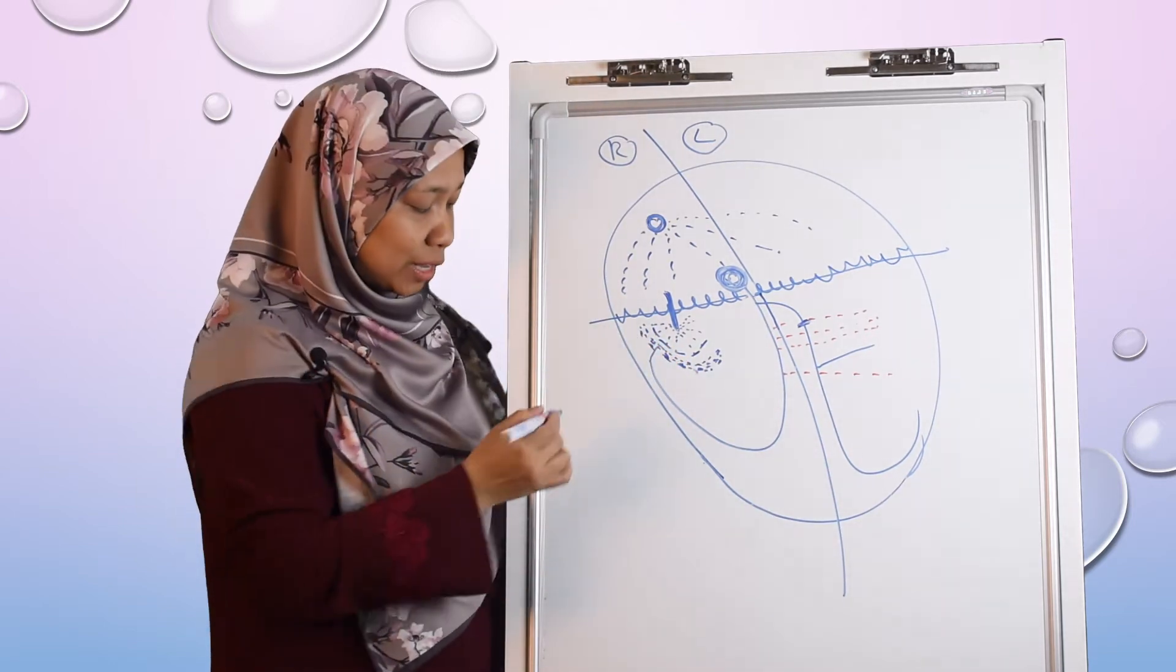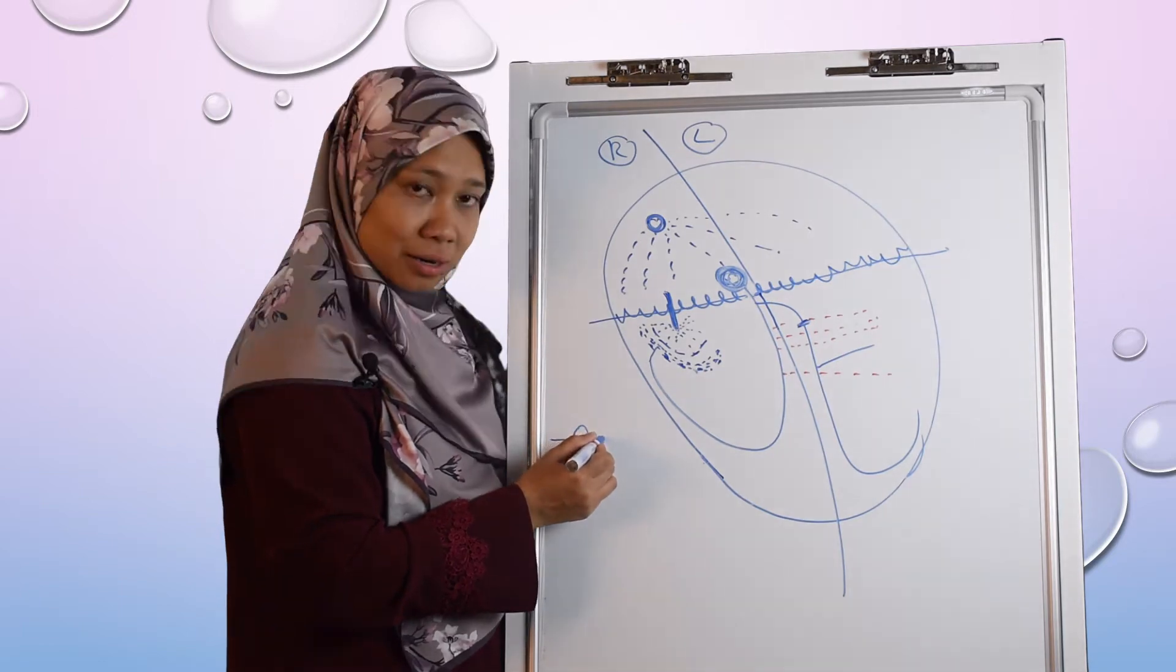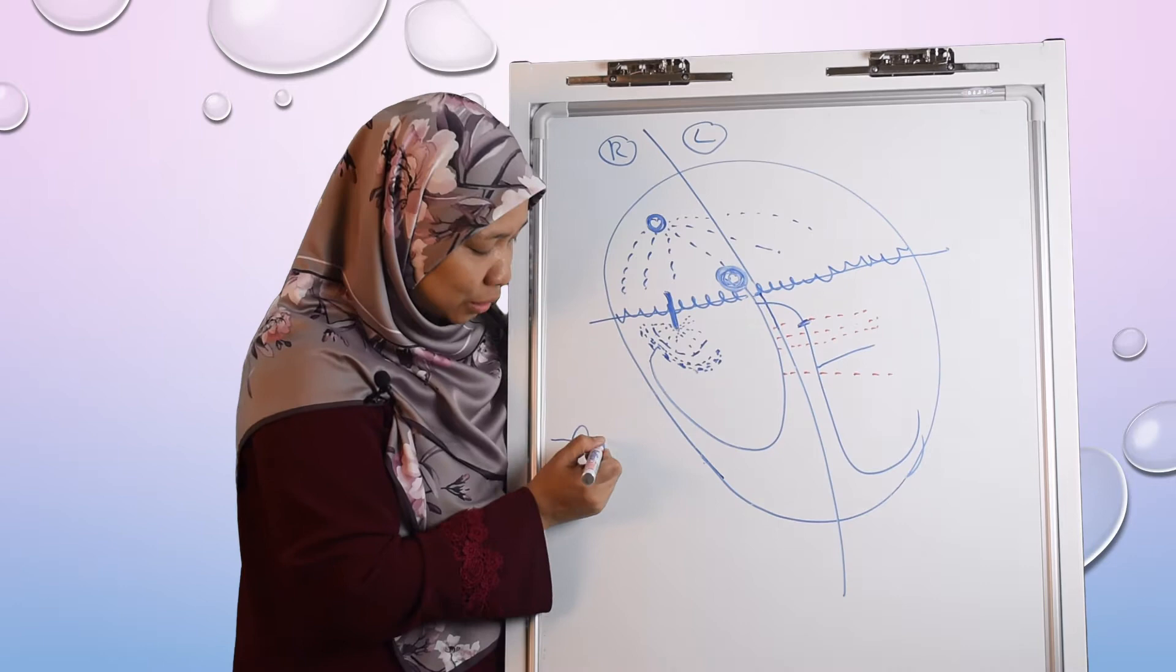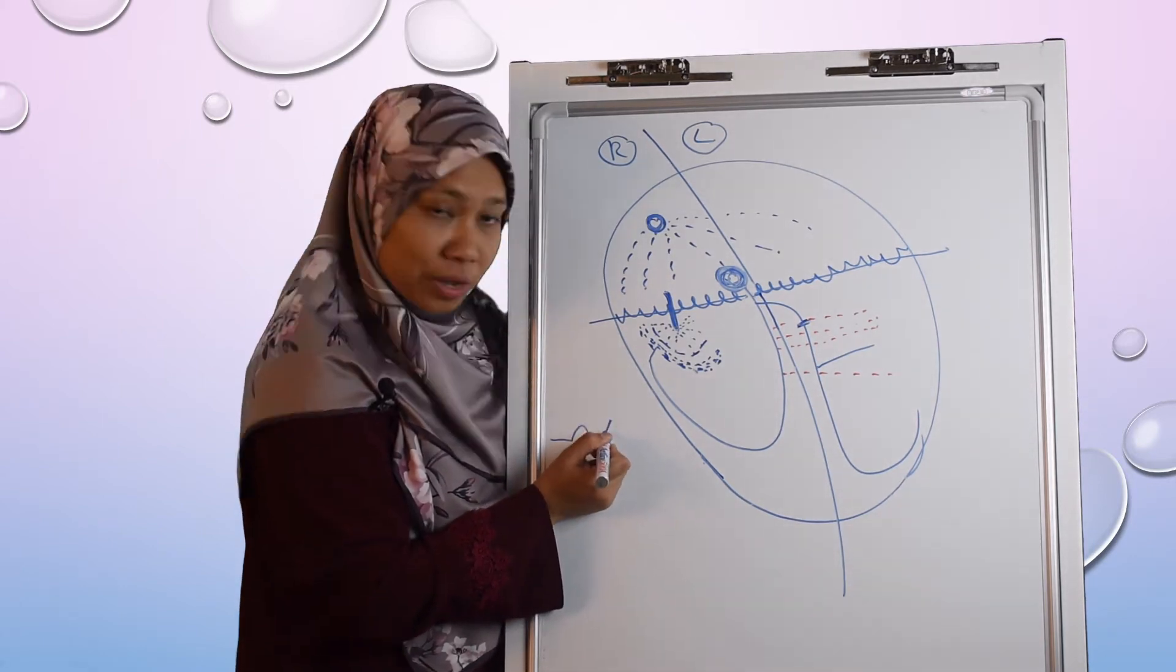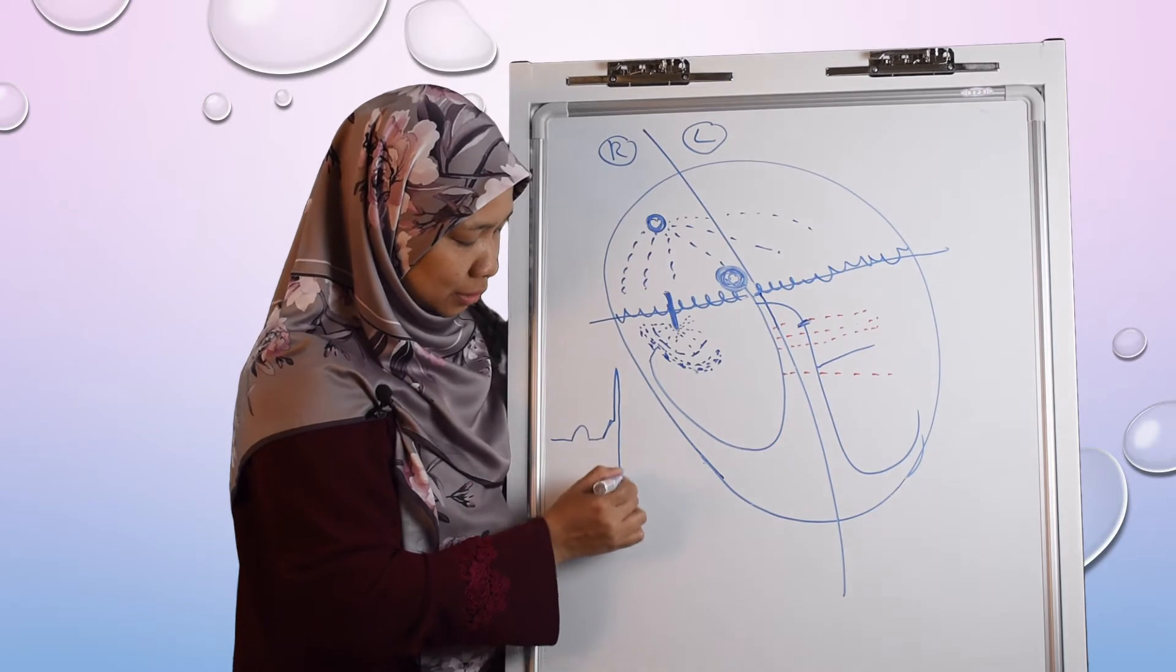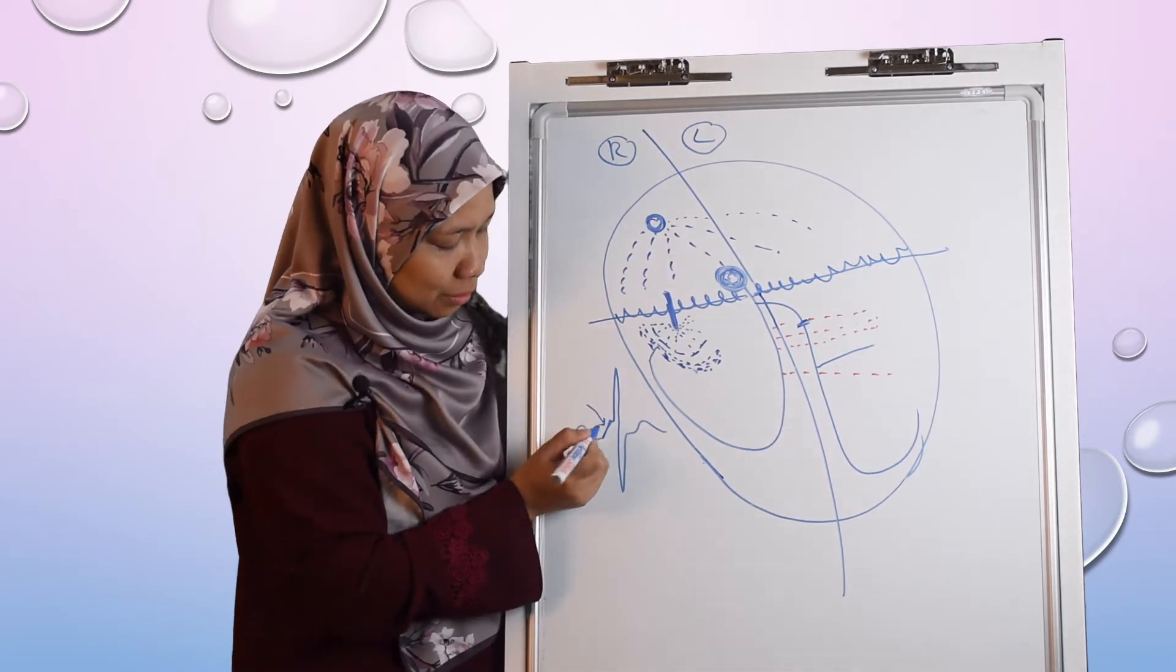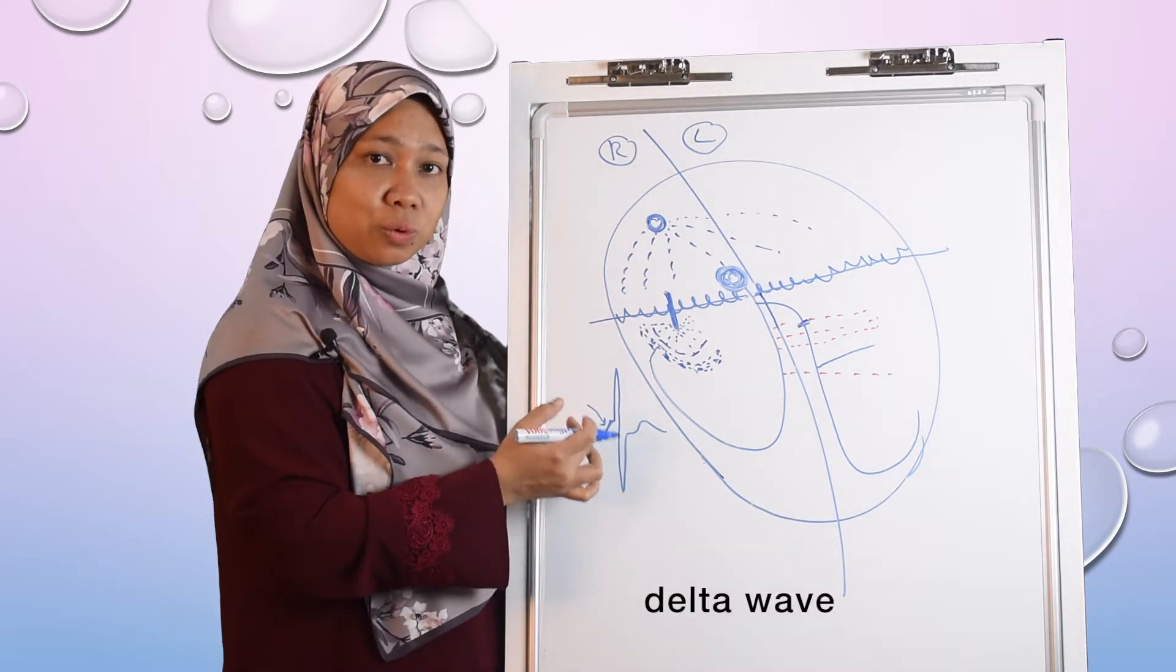On the ECG, we can see there's a P wave, PR interval, and then because this area already depolarized, you can see a premature upwards wave here. And then after a while the normal QRS complex will merge like this. So we can see there's a wave here. This is what we call delta wave, which is seen in Wolf-Parkinson-White.